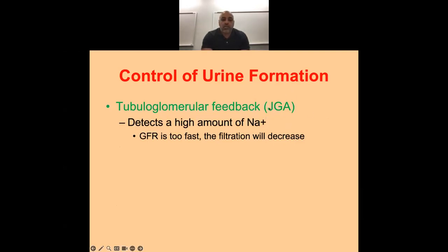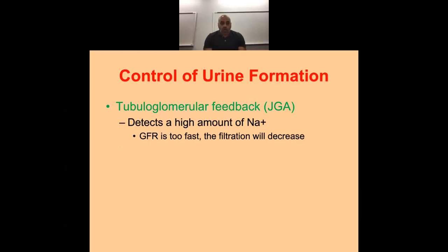Tubuloglomerular feedback — that's the JGA. When sodium levels are high and we're losing too much volume, we release renin to modulate that, and we also decrease GFR so we don't lose whatever minimal amount is coming through.